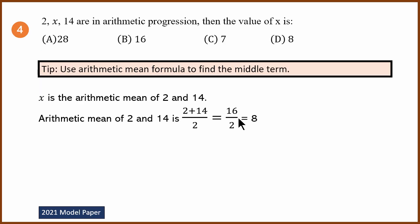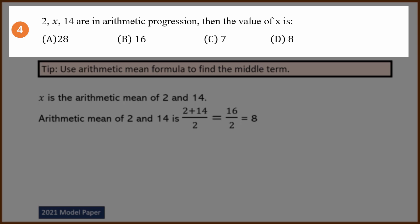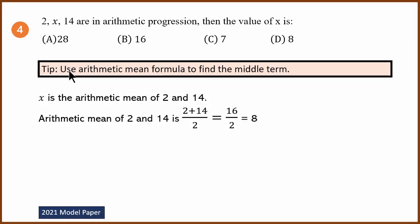Fourth question. This is also an arithmetic mean question, but asked in a different way. 2, x, 14 are in arithmetic progression. What is the value of x? Use the arithmetic mean formula. x is the arithmetic mean of 2 and 14, which is 2 plus 14 by 2, equals 16 by 2, equals 8. The answer is 8.